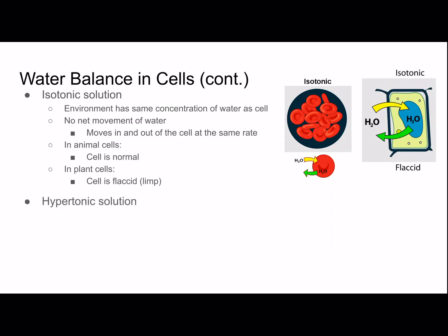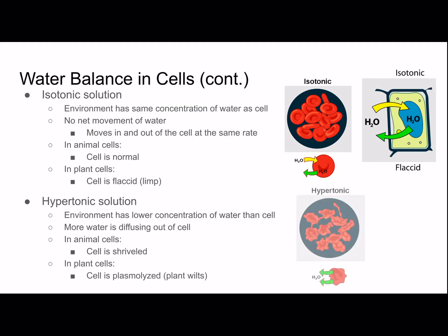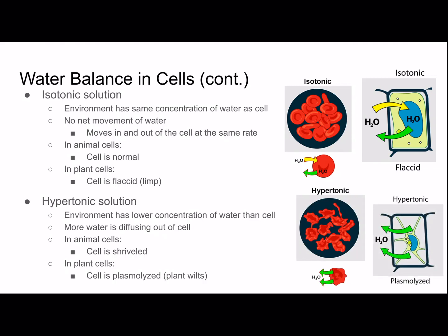Hypertonic solution is the opposite of hypotonic — the environment has a lower concentration of water than the cell, so more water diffuses out than in. In animal cells this causes the cell to shrivel, and in plant cells the cell is plasmolyzed, which means the plant will wilt. Here's an animal cell and a plant cell in a hypertonic solution.